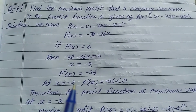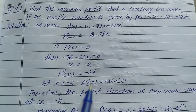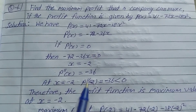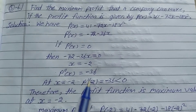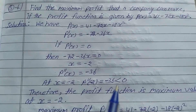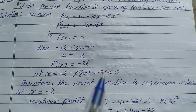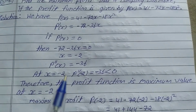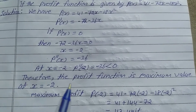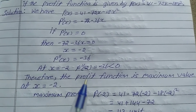At x = minus 2, p''(minus 2) = minus 36, which is less than 0. This satisfies the maxima condition, so the profit function is maximum at x = minus 2.